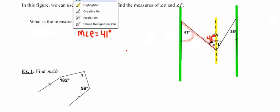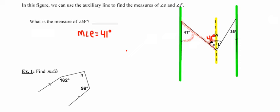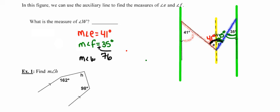Now that I've determined the measure of angle E, I'm going to use the blue line as my transversal and look at the two parallel lines on the right. The angle measuring 35 degrees and angle F are also alternate interior angles, so the measure of angle F must equal 35 degrees. Angle W is made up of angles E and F, so 41 plus 35 makes the measure of angle W equal to 76 degrees.